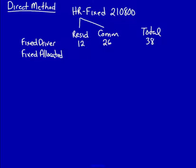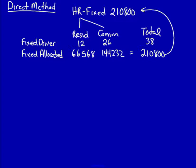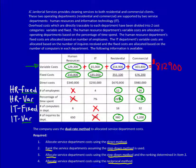Fixed allocated: 12 divided by 38 multiplied by 210,800 equals 66,568. Same again: 144,232. Quick check to make sure the total equals 210,800 — it's perfect. Moving on, fixed — back to the question — and I need the fixed driver.